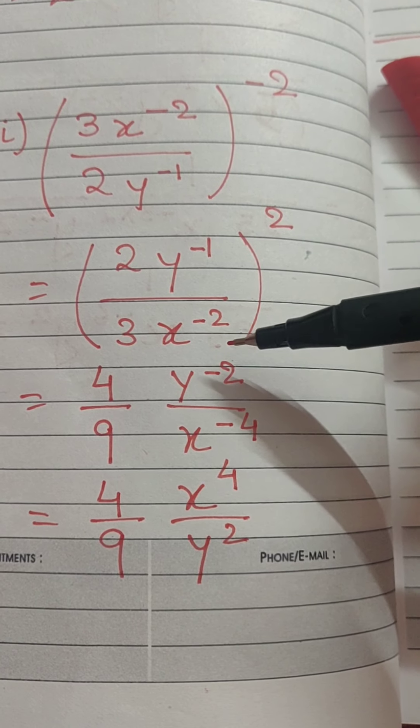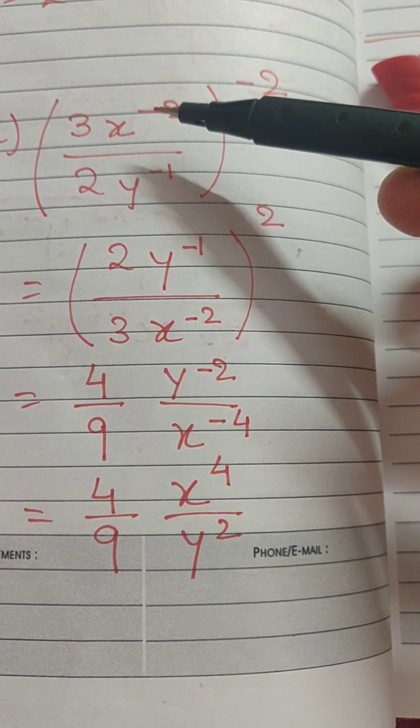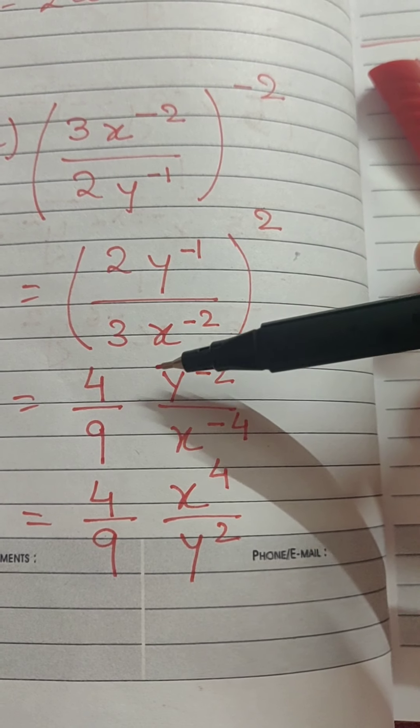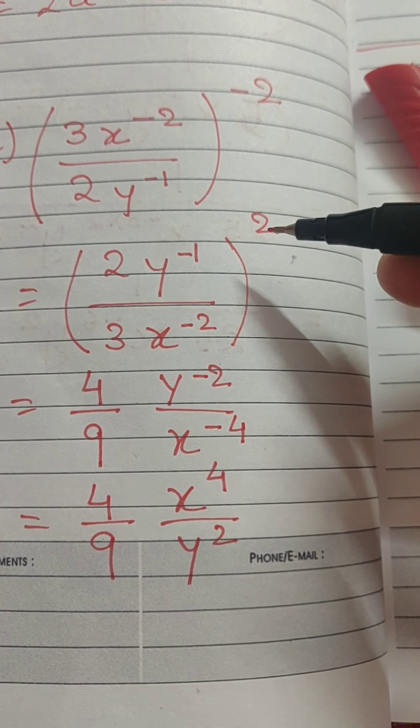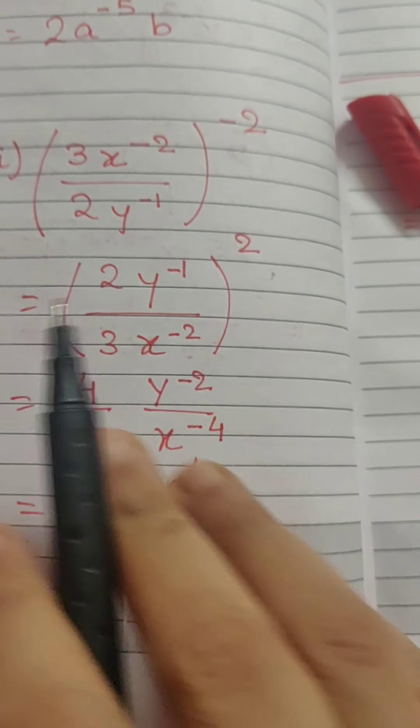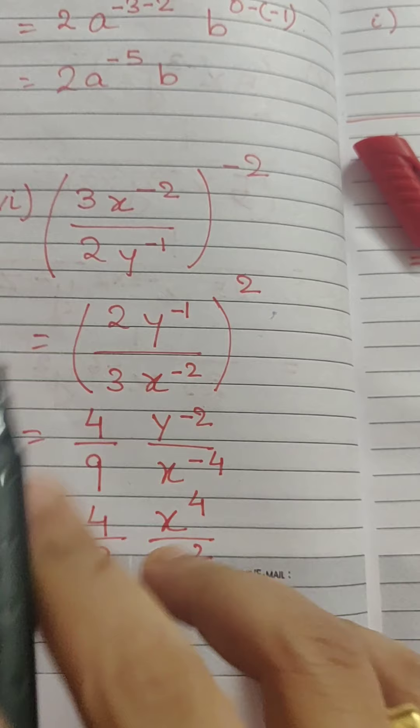Here in the next step I have done the same thing. I have reciprocated the base. The denominator becomes numerator and the numerator becomes denominator. And as a result our exponent becomes positive. Now, we focus on the base.